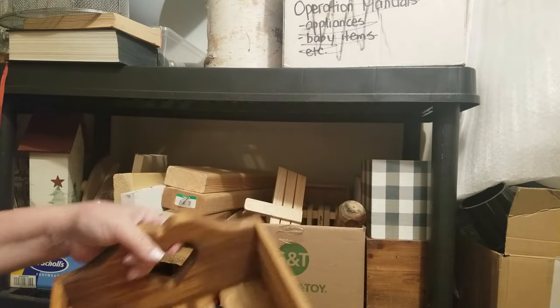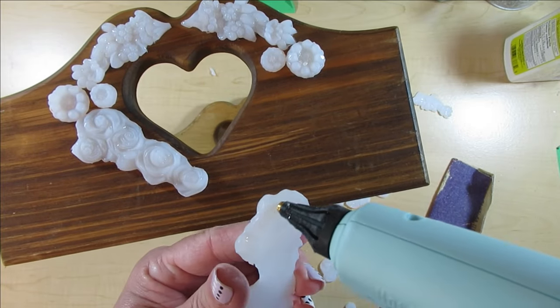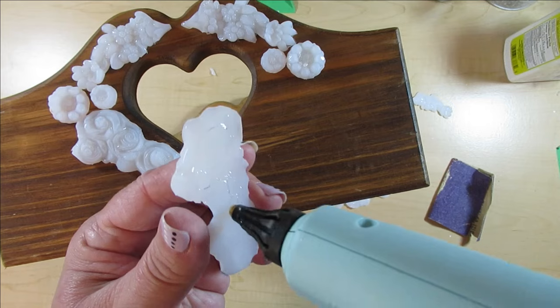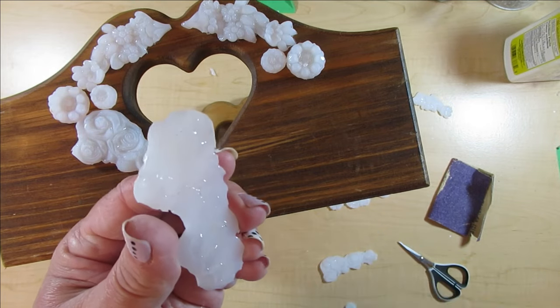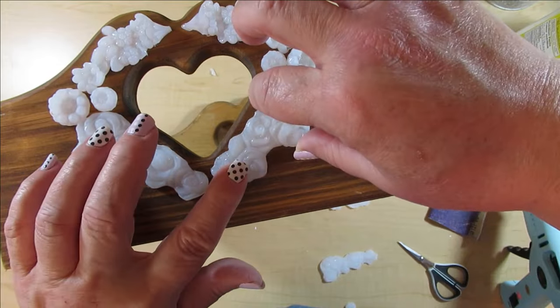But now I'm going to take the hearts and do something to incorporate all of this and make it look French country. I'm going to create a design using all of the hot glue molds that I just did, right around the heart.